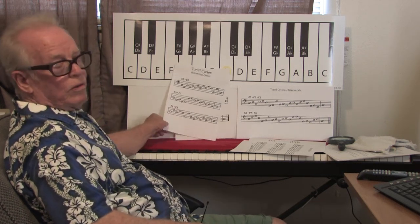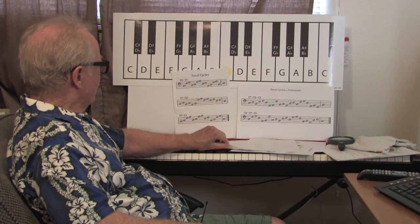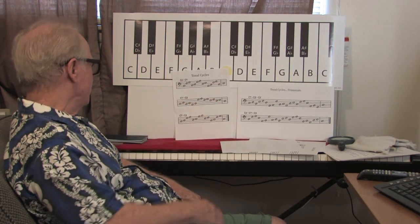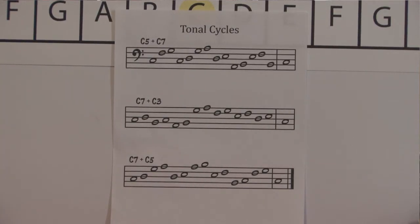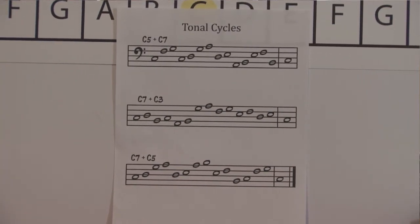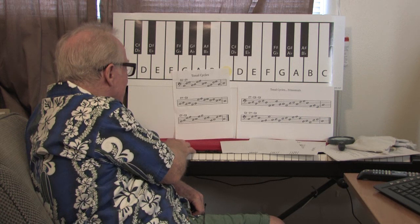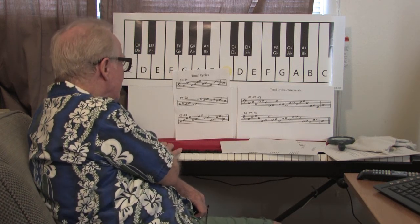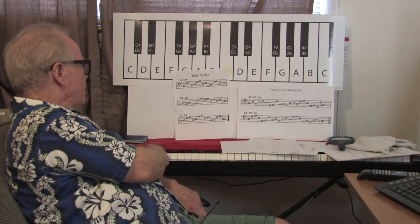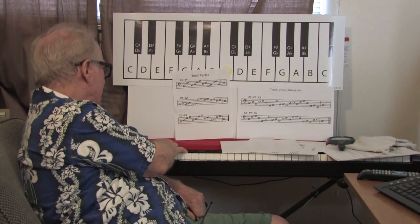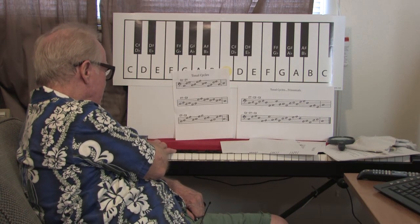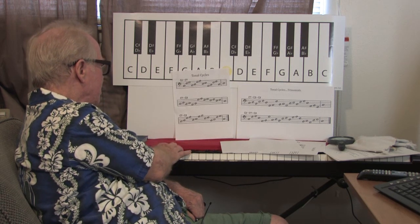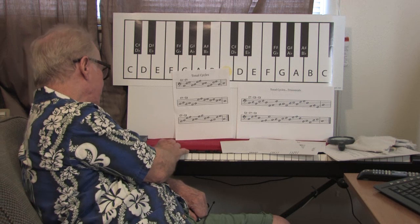Those are binomial cycles. Here's a C5 plus a C3, a C5 plus a C7, and a C7 plus a C5.